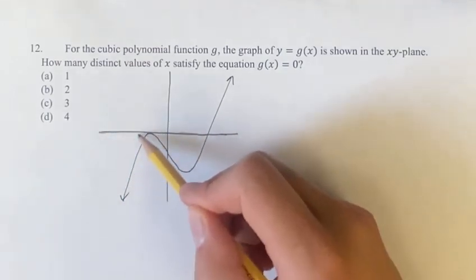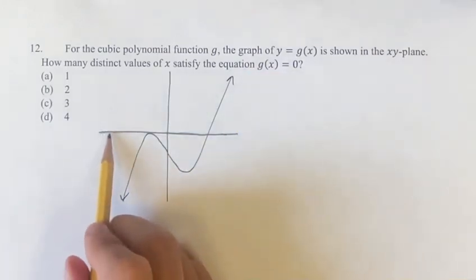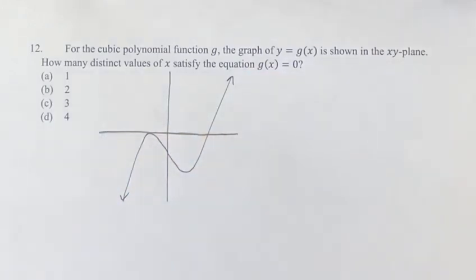How many times does this equal this? So you can think of it as a system of equations where we're just seeing when do they intersect. And it's not asking for what values they are, it's just asking how many they are.